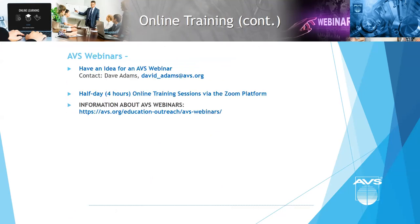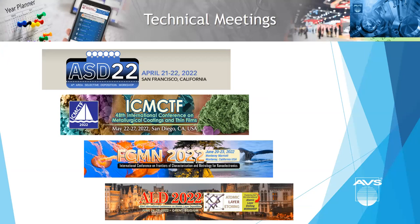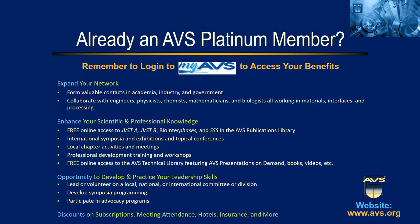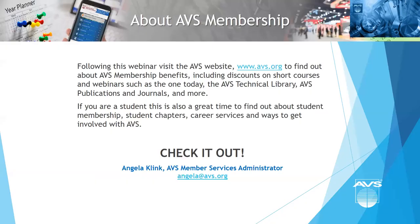If you have an idea for an AVS webinar you'd like to see — these are half-day events — please contact Dave Adams if you're interested in coordinating one or have a topic suggestion. We have upcoming technical meetings in April, May, and June. Registration for all is open. If you're not already an AVS Platinum member, we encourage you to join. You can expand your network, enhance your scientific and professional knowledge, and get discounts on many events. Visit avs.org and contact Angela Klink, our AVS member services administrator.